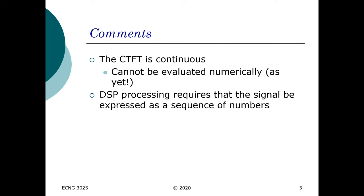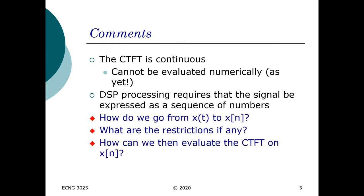So the questions we need to ask are: how do we move from x(t) to x(n), meaning how we move from continuous time to discretized time, if there are any restrictions, and how can we evaluate that continuous time Fourier transform on x(n). This is where sampling comes into play.